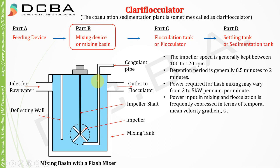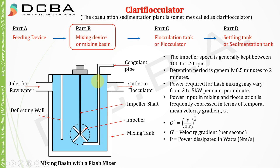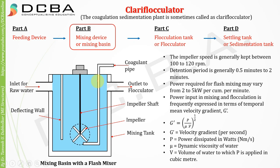Power input in mixing and flocculation is frequently expressed in terms of temporal mean velocity gradient G'. The formula is G' = √(P / μV), where P is power dissipated in watts (Newton-meters per second), μ is the dynamic viscosity of water, and V (capital V) is the volume of water — not velocity. G' is the velocity gradient, representing the slope of velocity between any two points, with units of per second (s⁻¹).